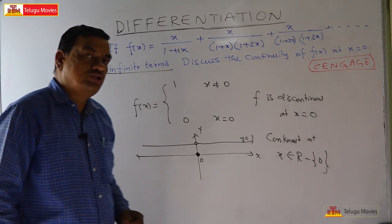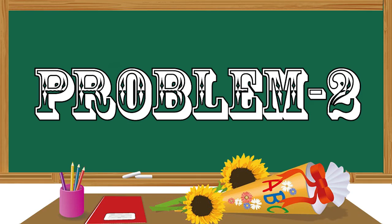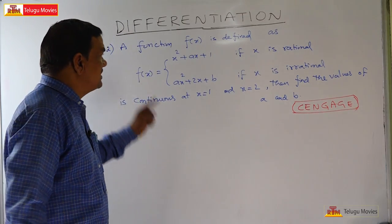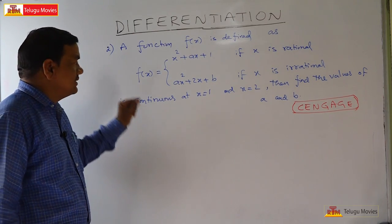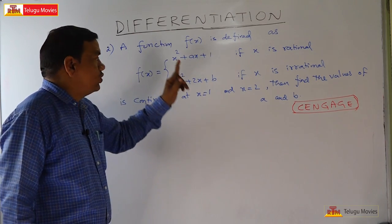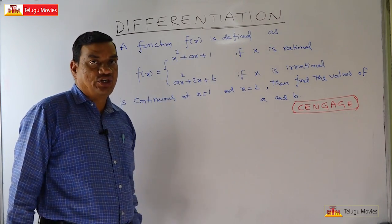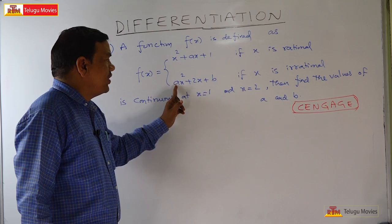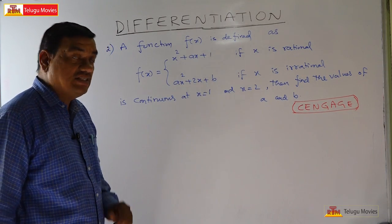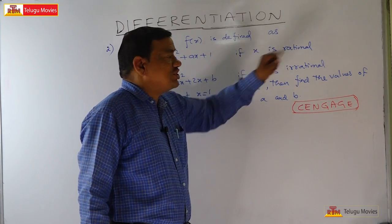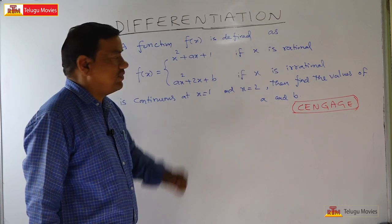I hope you understand this solution. Welcome to the second problem. The function f(x) is defined as: f(x) = x² + ax + 1 if x is a rational number, and f(x) = ax² + 2x + b if x is an irrational number.